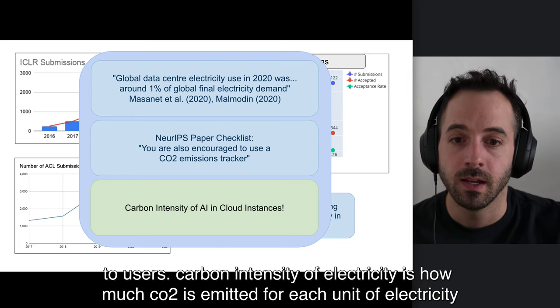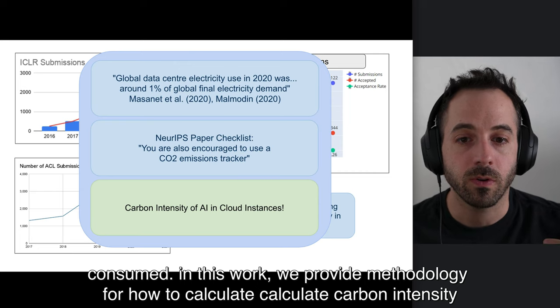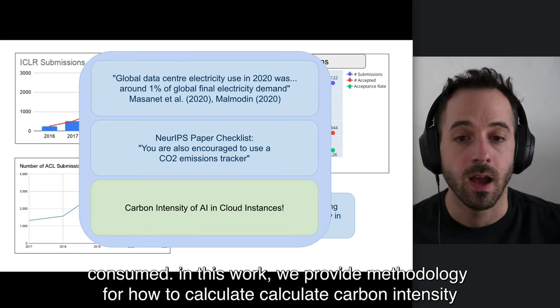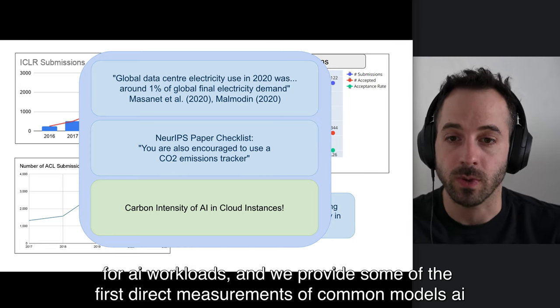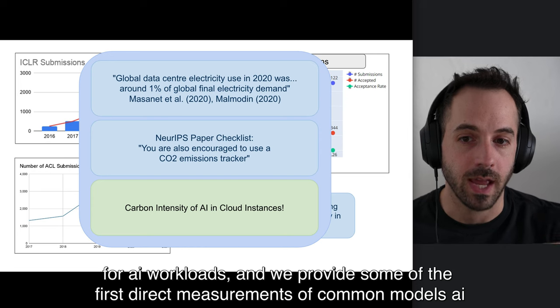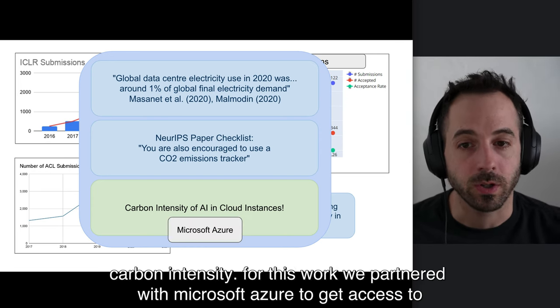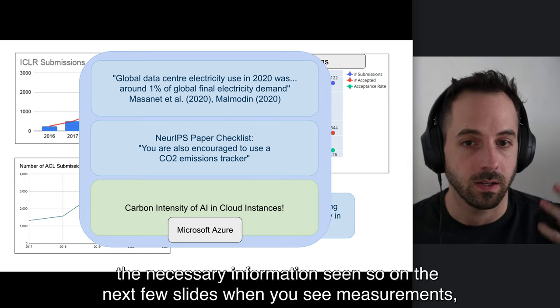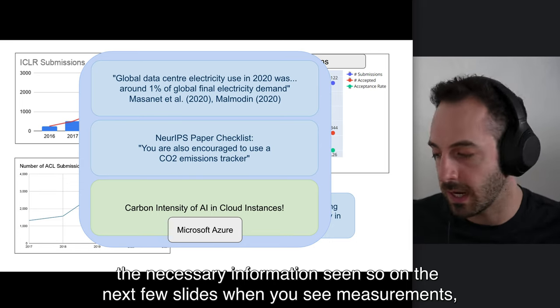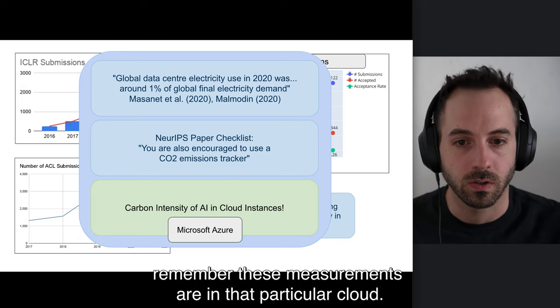Carbon intensity of electricity is how much CO2 is emitted for each unit of electricity consumed. In this work, we provide methodology for how to calculate carbon intensity of AI workloads, and we provide some of the first direct measurements of common models' AI carbon intensity. For this work, we partnered with Microsoft Azure to get access to the necessary information, so when you see measurements, remember that these measurements are in that particular cloud.